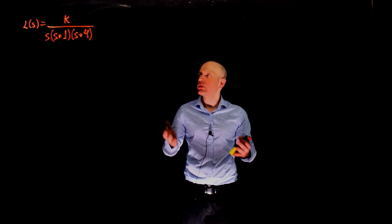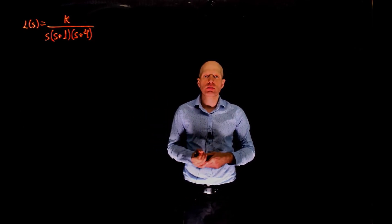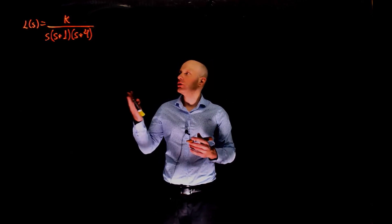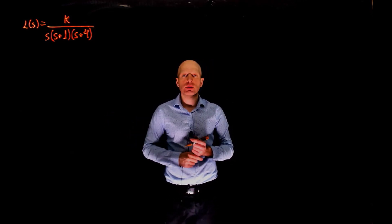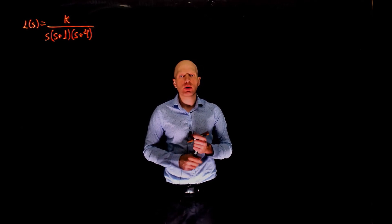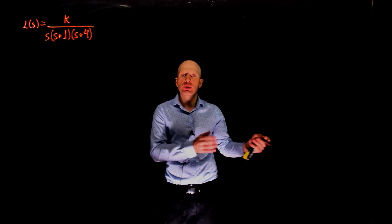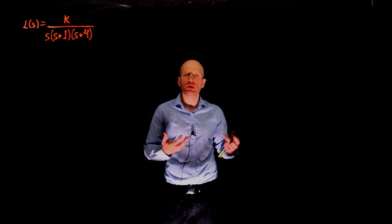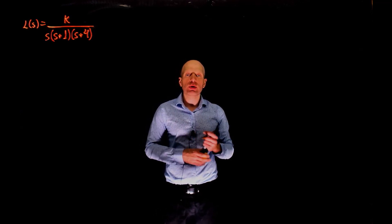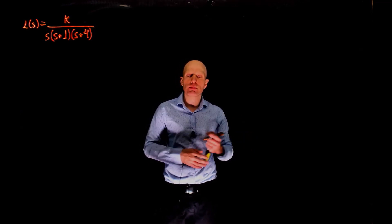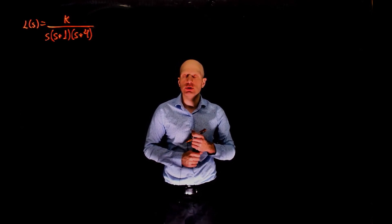Let's start with the first part — when k equals 5, what is the gain margin? To do that, we need to evaluate this transfer function at j omega, determine the real and imaginary parts of the transfer function, set the imaginary part to zero to find the frequency at which the phase is 180 degrees. With that frequency, we will be able to evaluate the magnitude and then determine the gain margin.